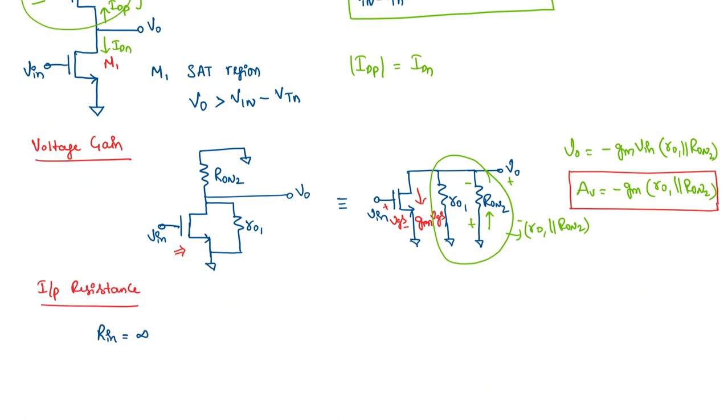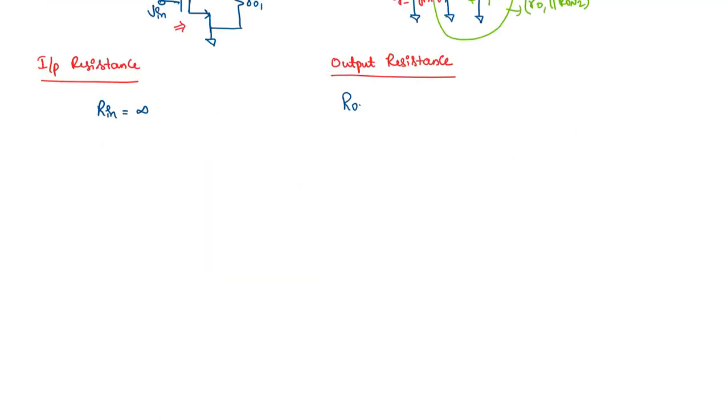And now let's look at the output resistance. Output resistance Rout is equal to Vx over Ix at Vin equals 0. So let's take this small signal equivalent circuit here and make the input node grounded, making Vin equal to 0. But in this case, as Vgs is equal to 0, GM times Vgs will be 0.